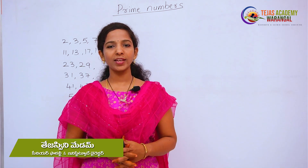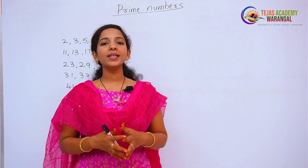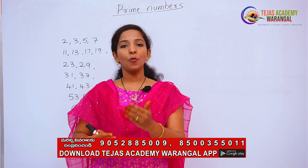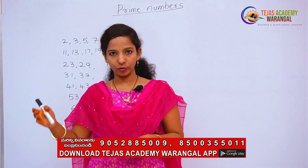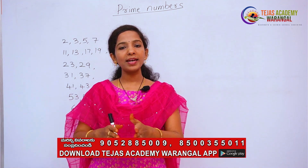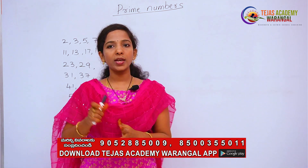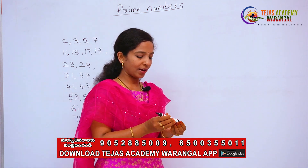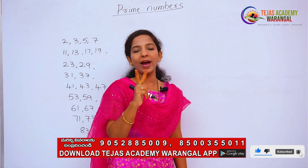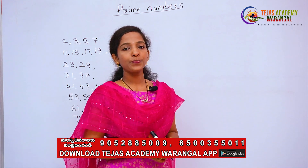Hello everyone, welcome to Tejas Navodaya and Sainit Klochin Center. Today we are going to study prime numbers. So what is a prime number? A number which has only two factors — one and itself — is called a prime number. A number which has only one and itself as factors is called a prime number.